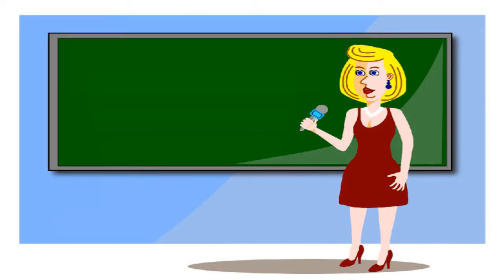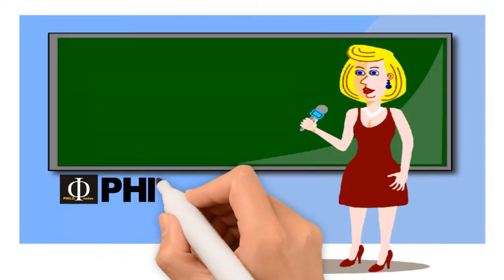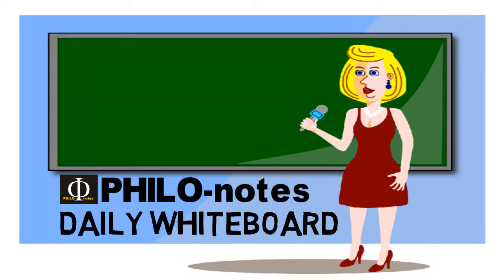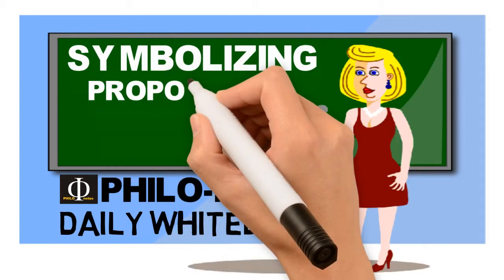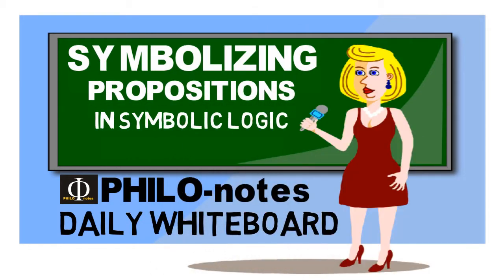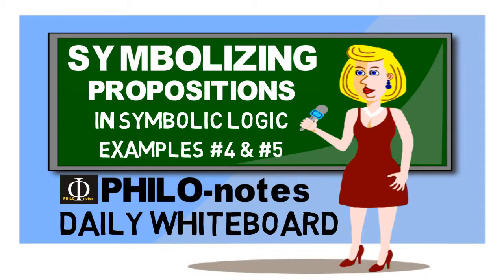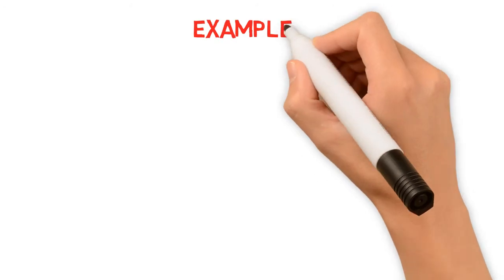Hello everyone, welcome once again to our daily whiteboard here at PhiloNotes. This edition is the last discussion for now on the topic of symbolizing propositions in symbolic logic. So previously, we symbolized three different propositions. And today, I will provide two more examples. Here is example number four.